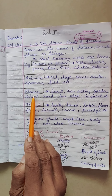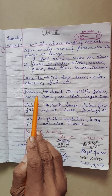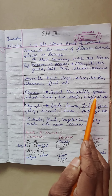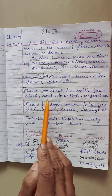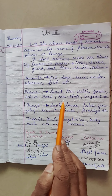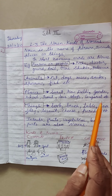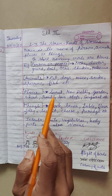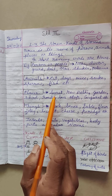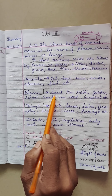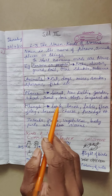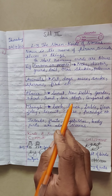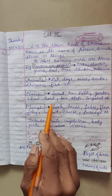Now examples related to places. Surat, New Delhi, garden, school, road, bus stop, Gujarat etc. Places include city names, country names, roads, schools. All these are places.